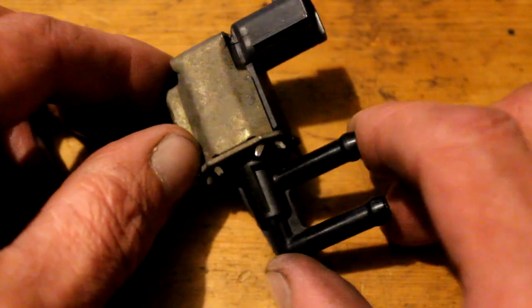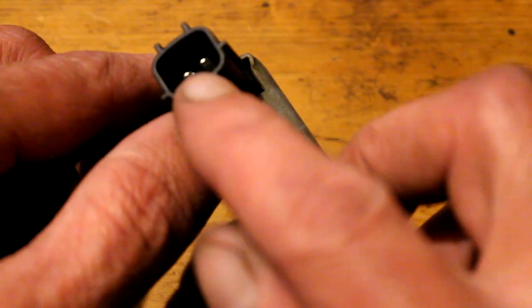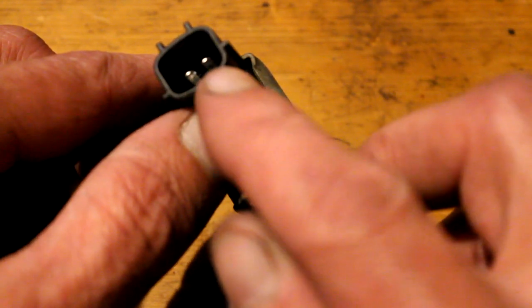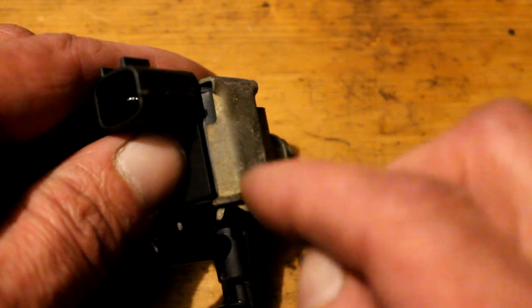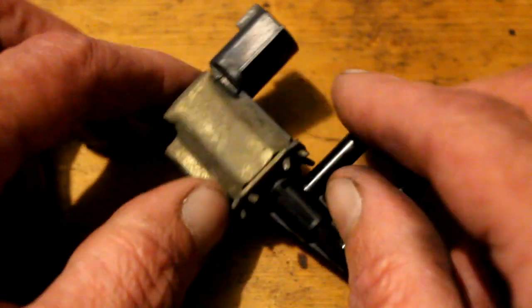I've got a purge valve off a Nissan Micra K12 and there's two terminals in there. It doesn't matter which way around they go because it's just a wired solenoid, so you can put plus or minus whichever way around you want.